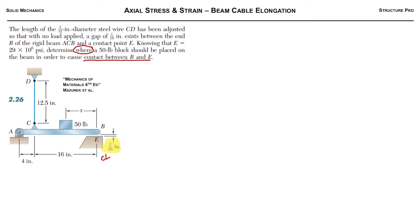It's been calibrated so that there's a sixteenth of an inch gap at points B and E, and we're asked where should the 50 pound load be placed to close this contact. As usual, please try the question first, but we're gonna jump right in.